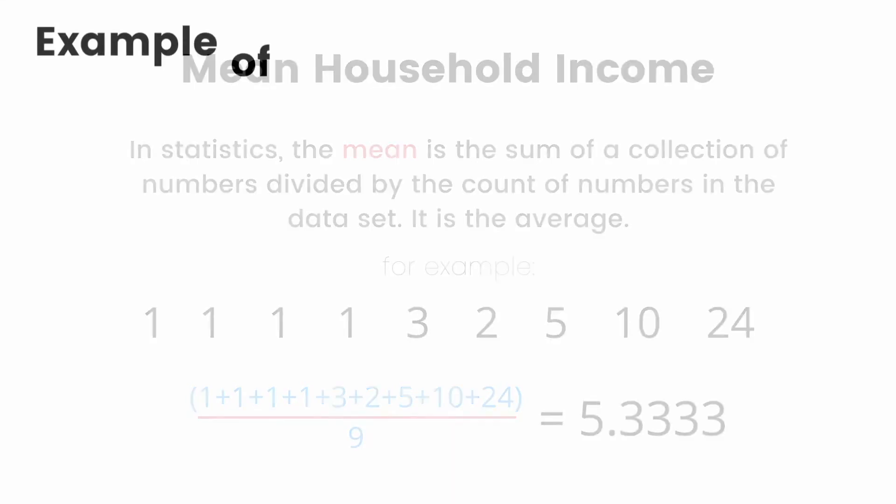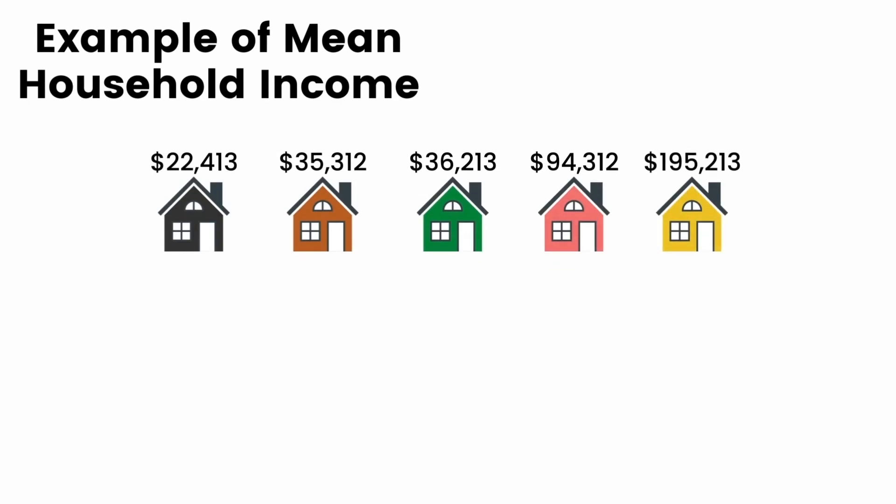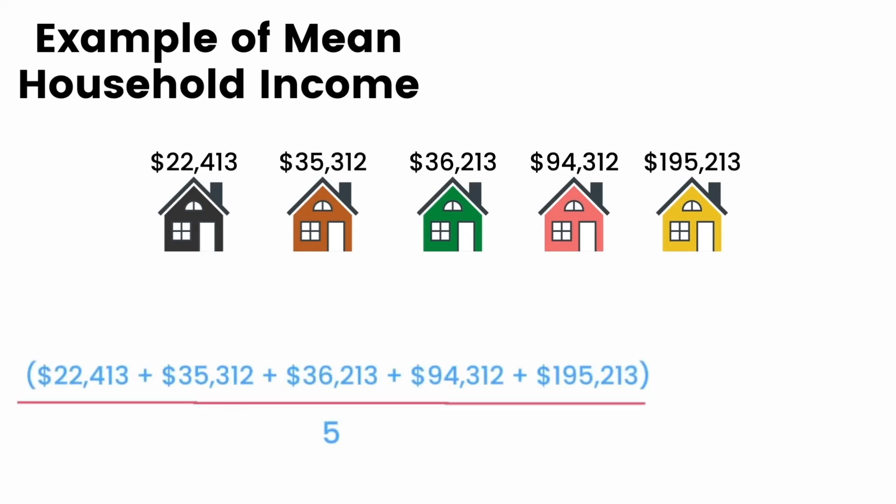Let's look at an example of mean household income using the same fictional village we used earlier. We have five houses ranging from $22,413 to $195,213. To calculate the mean, we simply add up the household incomes and then divide by the total count, which is 5. We get a mean value of $76,692.60.